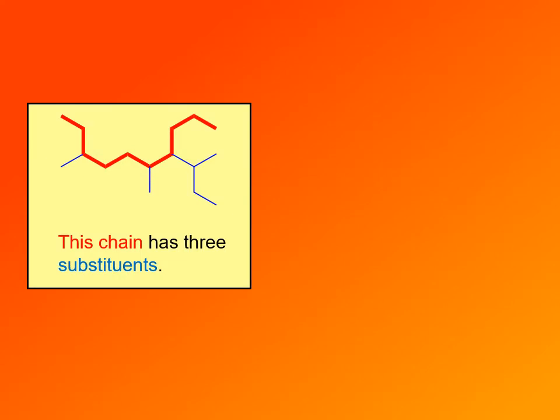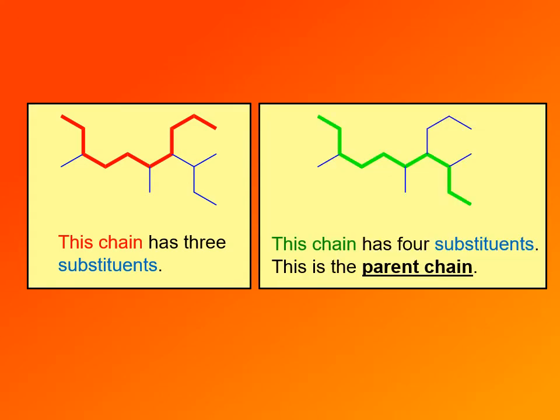Sometimes we have more than one chain with the same number of carbon atoms. Here we can identify a carbon chain shown in red and a carbon chain shown in green — both have ten carbon atoms, but they are different. So which is going to be the parent chain? It's going to be the one that has more substituents. The red chain has three substituents; the green chain has four — that's the parent chain. The reason is that the chain with more substituents is easier to name, because if there are more substituents, they are simpler and easier to name individually.